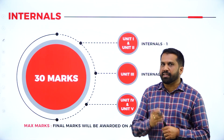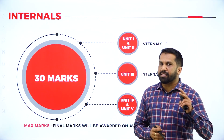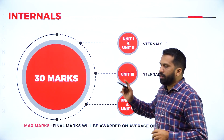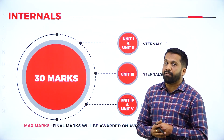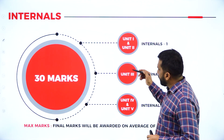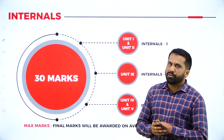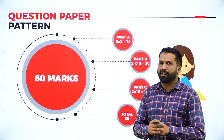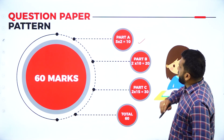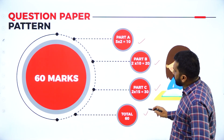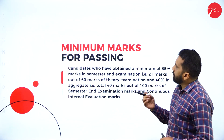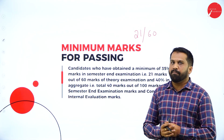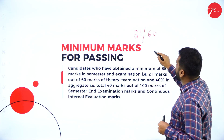Regarding the marks pattern: there are three internals, out of which two are compulsory. In case of emergency, if you miss one, any two will be considered. We go with the average of two. If you skip two and write only one, your internal marks will be very less. The question paper pattern has two-mark questions, five questions for ten marks, two 15-mark questions — the overall marks are 60. Minimum passing marks is 21 out of 60, and including internals, the overall score should be 40.